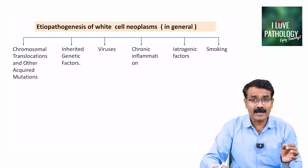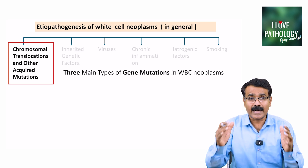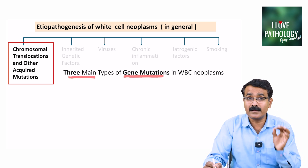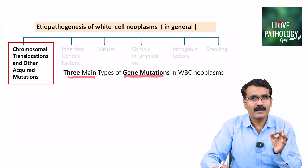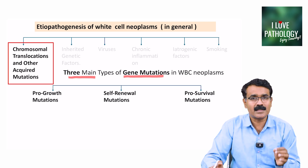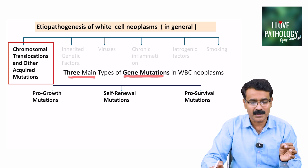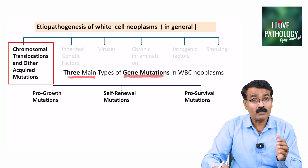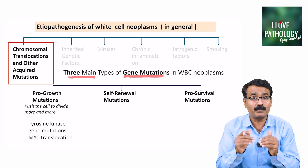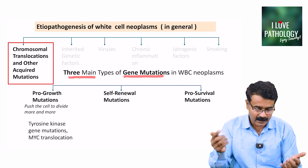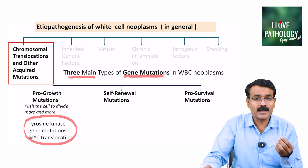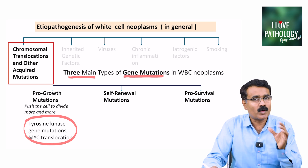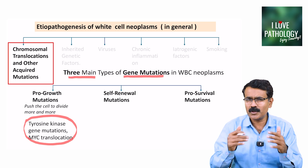Chromosomal translocations and other acquired mutations involve gene mutations of three main types across the entire spectrum of WBC neoplasms. These are pro-growth mutations, self-renewal mutations, and pro-survival mutations. Pro-growth mutations push the cell to divide more and more. Examples are tyrosine kinase gene mutations and MYC translocation.